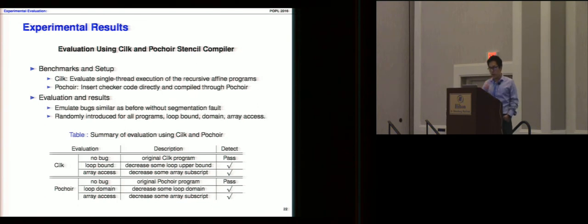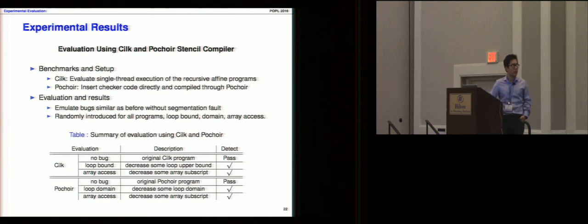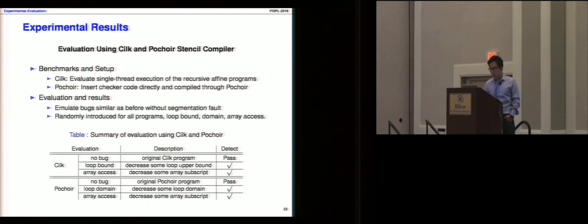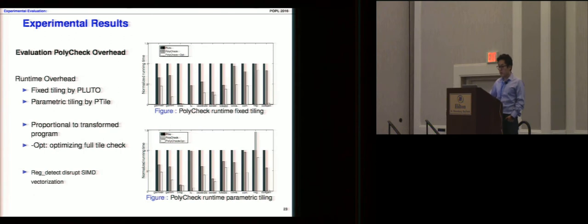Next we evaluated using the Silk and Pochois Stencil compilers with a similar bug injection protocol, and results are shown in the table. Notably, our tool can also handle the Pochois Stencil code, which uses a recursive version. Finally, we evaluated the runtime overhead of our Polycheck tool using Polybench benchmarks, optimized by Pluto for fixed tiling and ptile for parametric tiling.